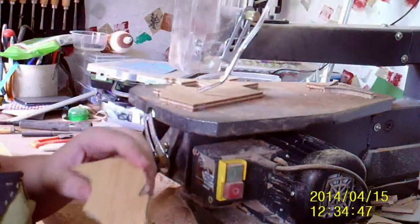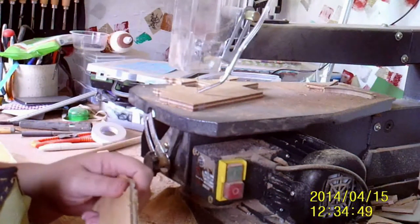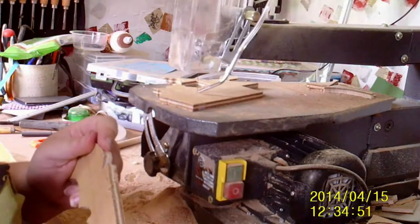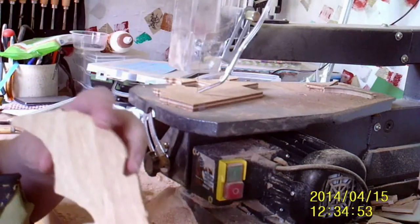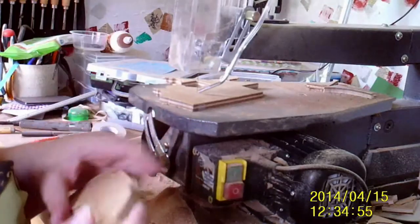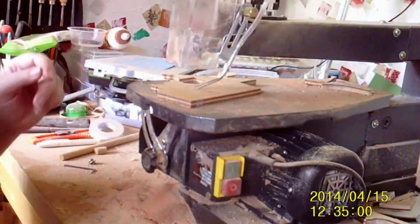Right, note to self and other scroll saw users: if when using a spiral blade it starts to sound like an Apache helicopter and starts to chew like that, you've got the blade in the wrong way around. I didn't think you could do that with a spiral, but apparently you can.